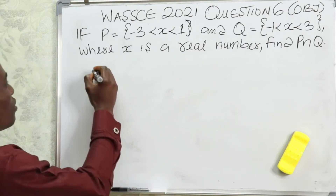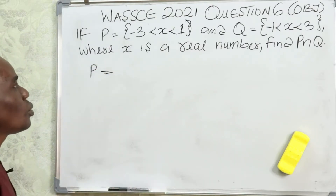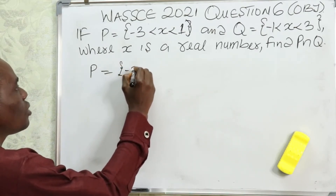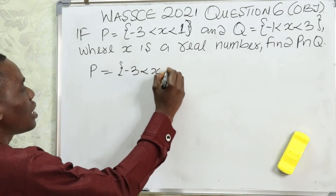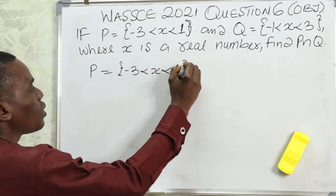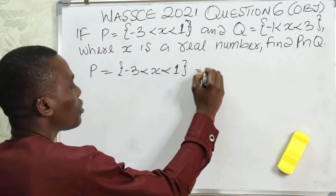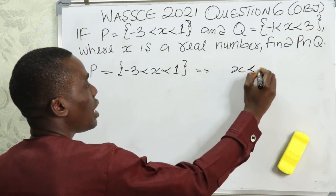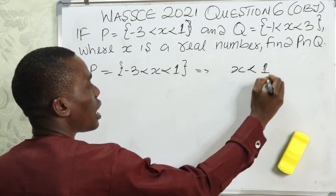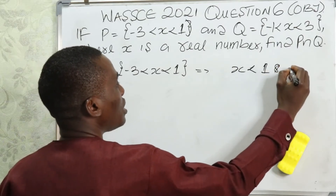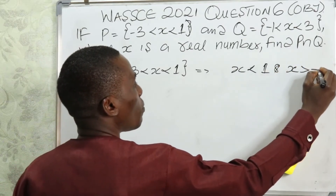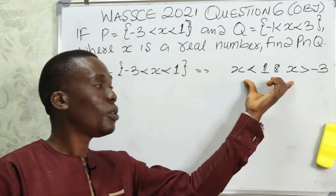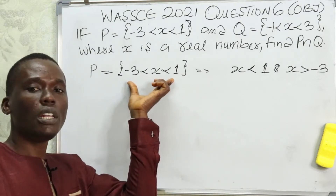Now let's look at the values of P. Remember you were told that P ranges such that minus three is less than x and x is less than one. If you break out this inequality, you find that x is less than one and x is greater than minus three. These are the values that make up this inequality range.